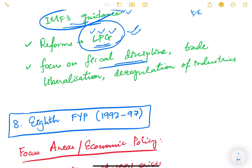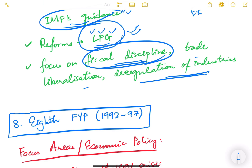One of the conditions the IMF imposed was fiscal discipline — limits on fiscal deficit, government spending, and government debt. Trade liberalization also had to be done, encouraging more private sector participation and easier imports and exports. Certain industries had to be deregulated from government control. These were some of the important decisions taken during this period as conditions of the IMF loan to fight the balance of payment crisis.